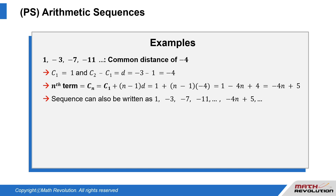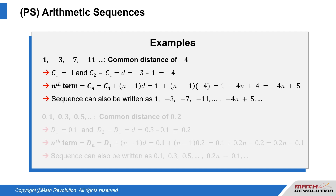negative 3, negative 7, negative 11, and so on, until −4n plus 5, and so on.